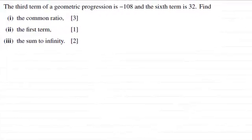Hi there. Now for this question, we're told that the third term of a geometric progression is minus 108, and the sixth term is 32. And we've got to find, for the first part, the common ratio for three marks, the second part the first term for one mark, and in the third part the sum to infinity for two marks.